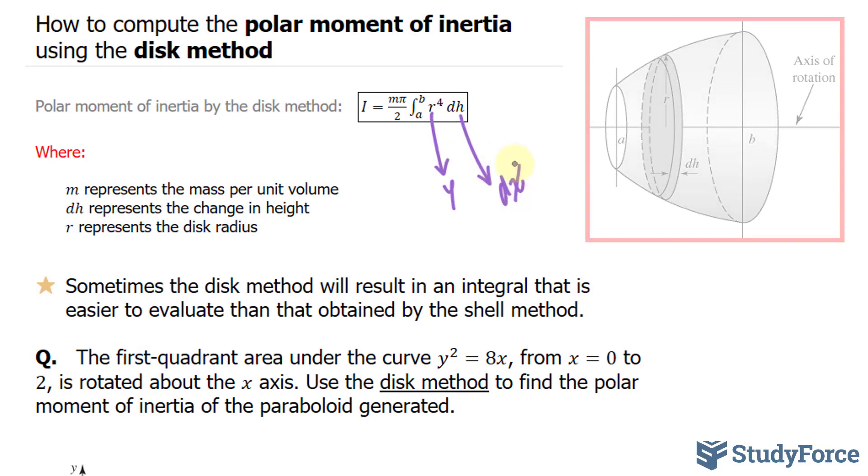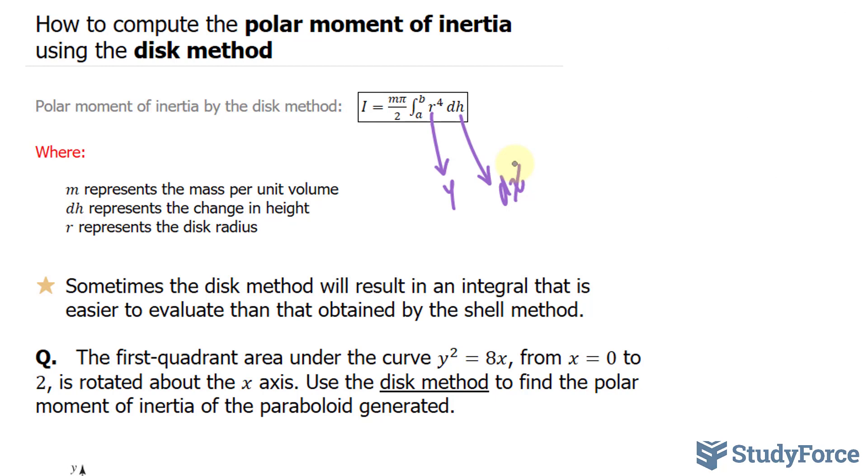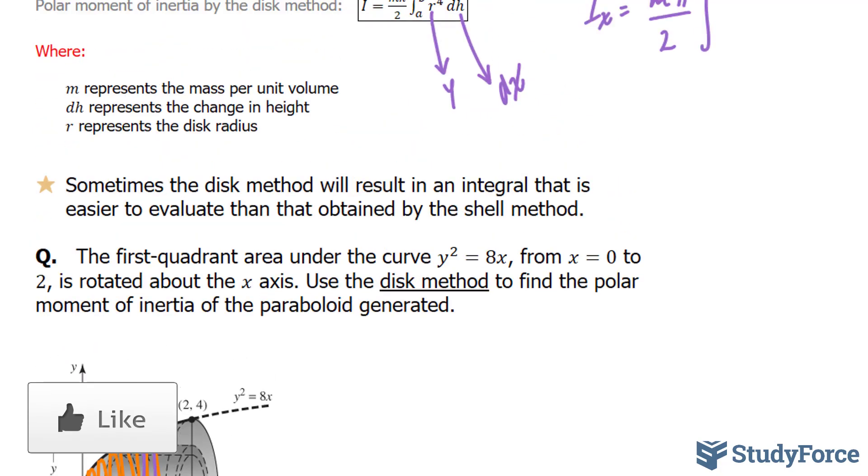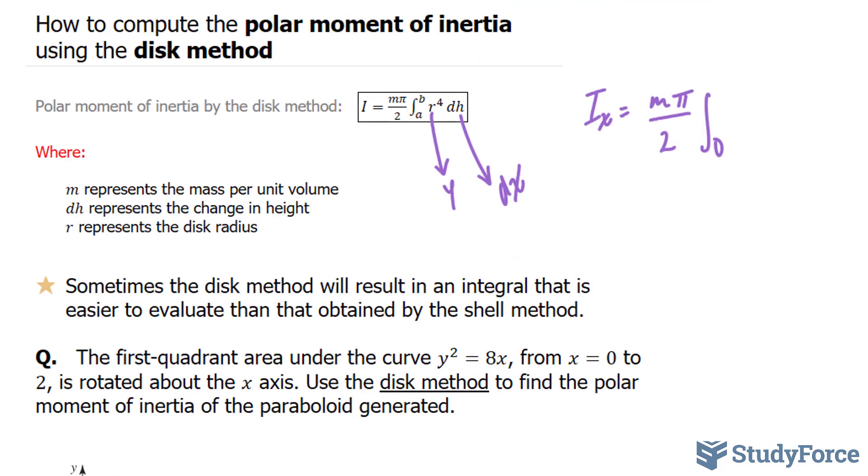Therefore, our integrand, our function that we're integrating, has to have the variable x. If that's confusing to you, let's start filling this in. The moment of inertia about the x-axis, which I'll represent as I subscript x, is equal to the mass, which I don't know, times pi over 2 times the integral between 0 and 2 for our function y to the power of 4 dx.